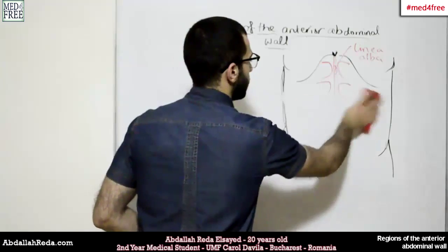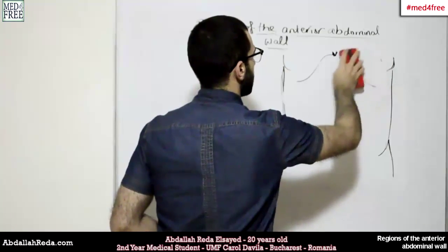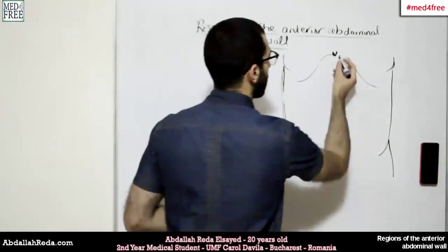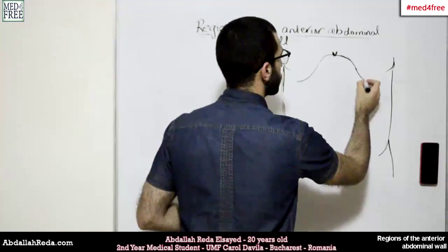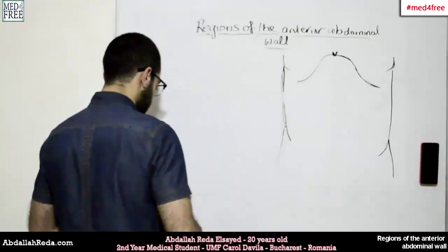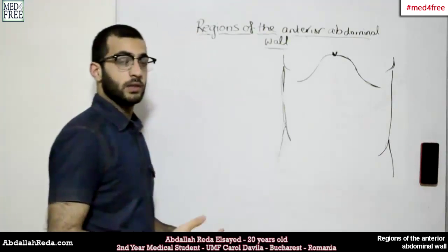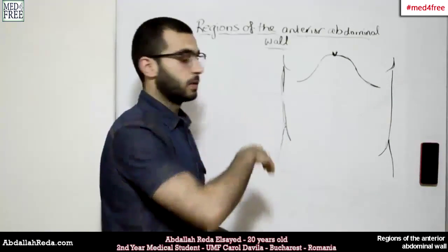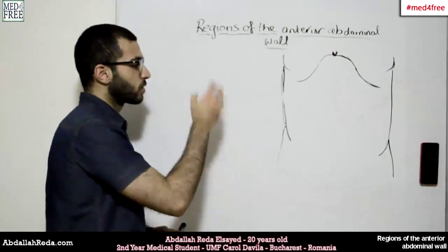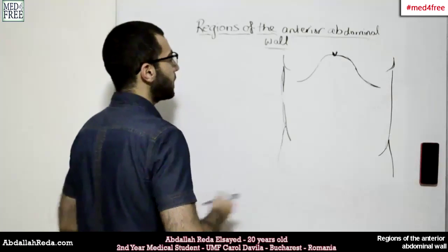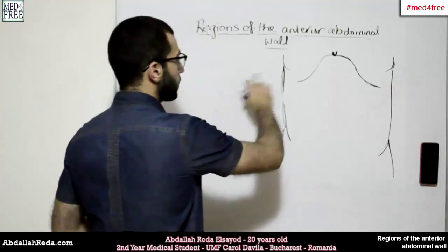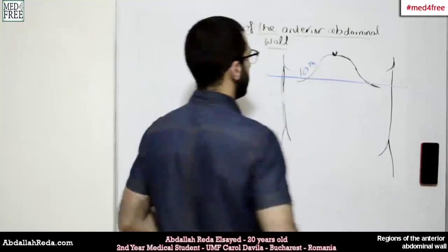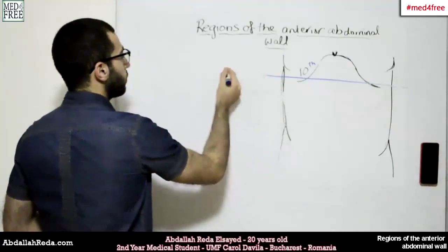Now, how do we define the regions of the anterior abdominal wall? We draw lines, and these lines pass through certain points that we need to know, because this process is important in radiology in order to define the locations of organs inside the abdominal cavity. The first line is a horizontal line passing through the tenth rib, and this line is called the subcostal line.